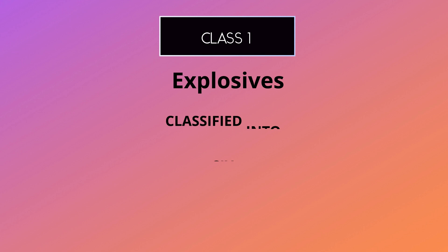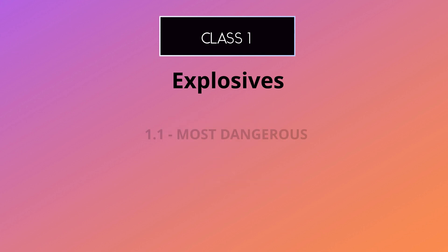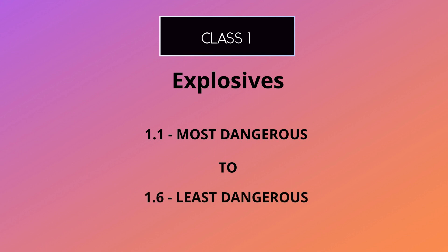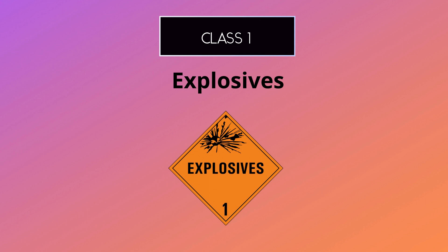Explosives are classified into six different categories, from 1.1, the most dangerous, to 1.6, the least dangerous. Their symbol is an exploding bomb, with a number indicating the category of the explosive.